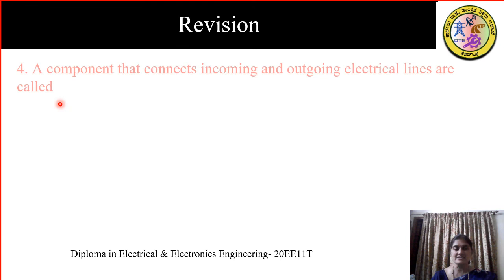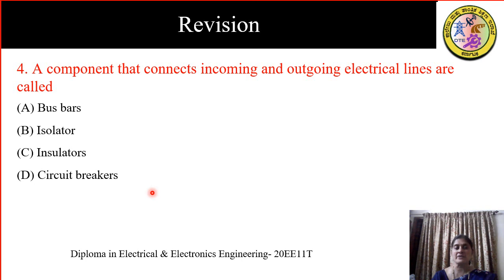The next question is: a component that connects incoming and outgoing electric lines is called — A) bus bars, B) isolators, C) insulators, D) circuit breakers. All the incoming and outgoing lines are connected to the bus bar. So the answer is A, bus bar.